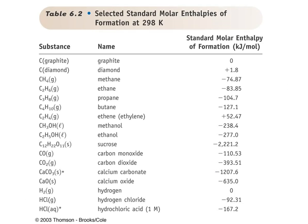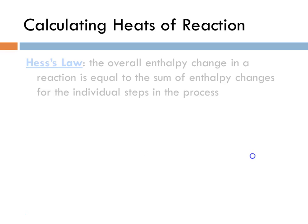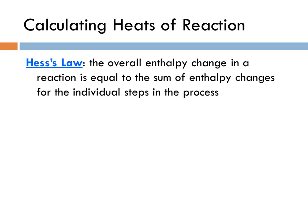Where do we get these heats of formation from? We have tables that we can look up — in our textbook or in the tables provided in the chapter packet — to get the standard molar enthalpies of formation, which are in kilojoules per mole. The overall enthalpy change is equal to the sum of the enthalpy changes for the individual steps in the process.